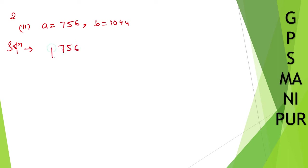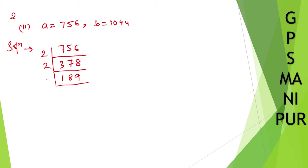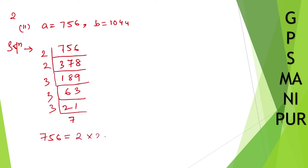So 756 — let me find the prime factors of 756. I can divide by 2. Dividing again by 2. Now I can divide by 3. Again divide by 3. One more time divide by 3 — 3 times 7 is 21. So I can write down that 756 equals 2 into 2 into 3 into 3 into 3 into 7.